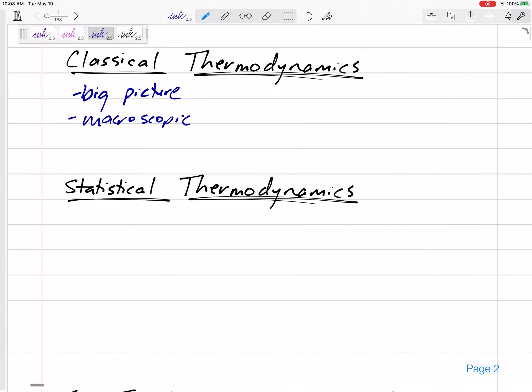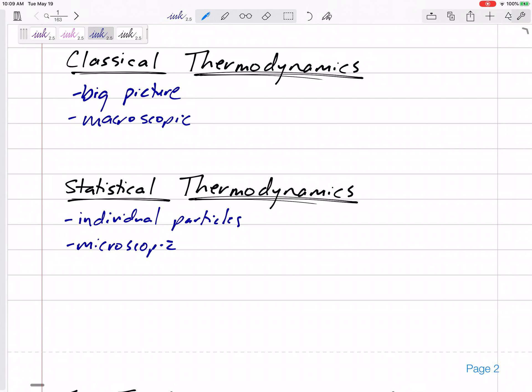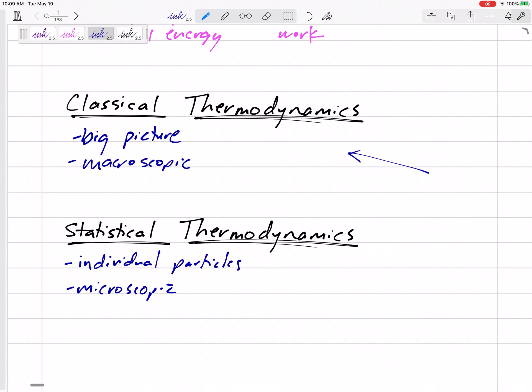Statistical is kind of looking at individual particles, thinking about the energy, the velocities, the energy of all the microscopic particles. That's statistical thermodynamics. This class will be classical thermodynamics. We're not going to get into the chemistry, the molecules, the particles. We're gonna be looking at the fluid as a whole.